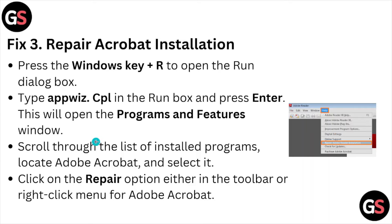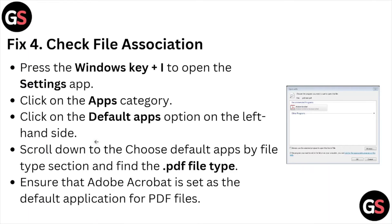Fix number four: check the file association. Press the Windows key plus I to open the Settings app. Go to the Apps category, click on Default Apps on the left-hand side, and scroll down to the 'Choose default apps by file type' section. Find the .pdf file type.